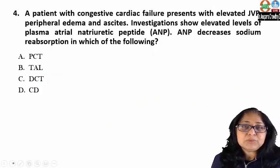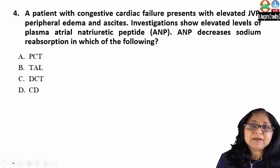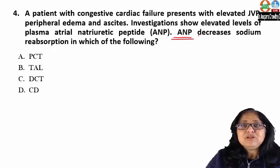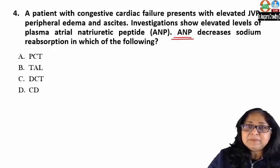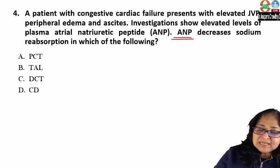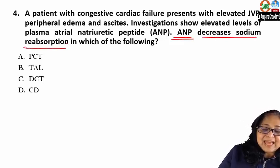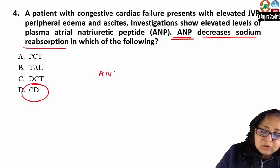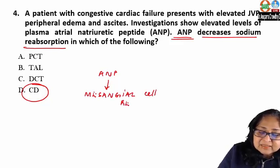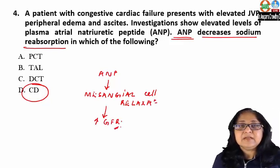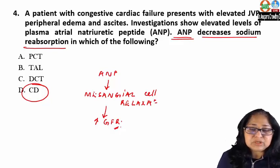A patient with congestive cardiac failure presents with elevated JVP, peripheral edema, and ascites. Investigations show elevated levels of ANP — atrial natriuretic peptide. ANP causes natriuresis, meaning increased loss of sodium in the urine, by decreasing sodium reabsorption in the collecting duct. ANP also acts at the glomerulus causing mesangial cell relaxation, which increases GFR.